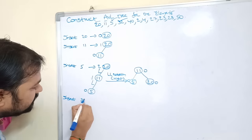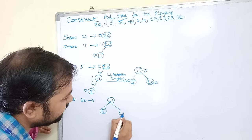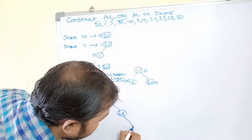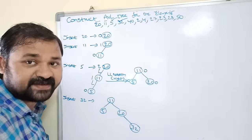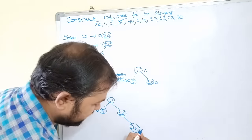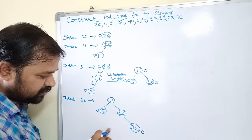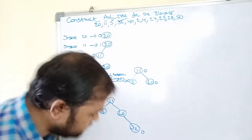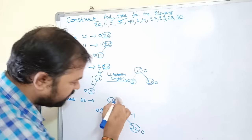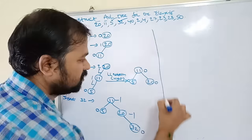Next insert 32. The current tree has root 11, left child 5, right child 20. 32 is greater than 11, so go right. 32 is greater than 20, so go right. Calculate balance factors from the leaf: for 32 it is 0; for 20 it is 0 minus 1 = -1; for 11 the left subtree height is 1 and right subtree height is 2, so 1 minus 2 = -1. All balance factors are in the range -1 to 1, so the tree is balanced and no rotation is needed.